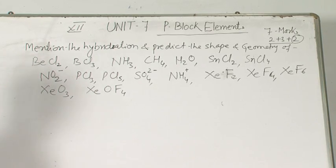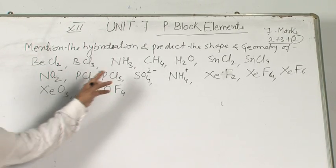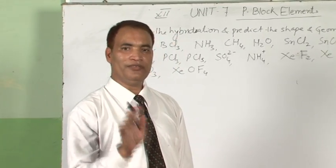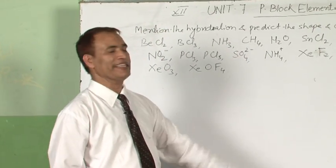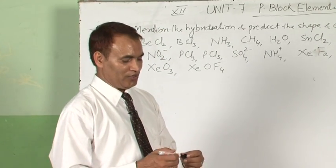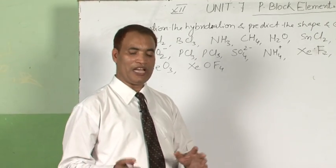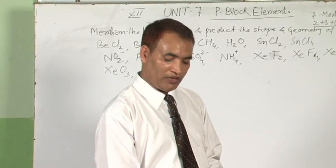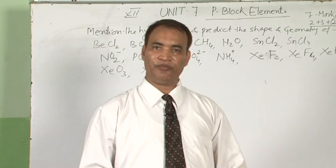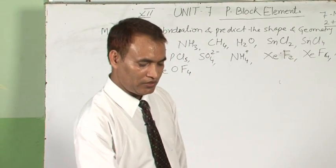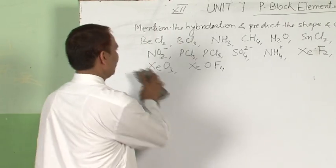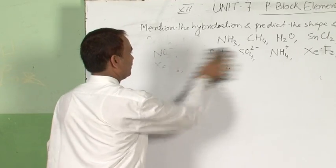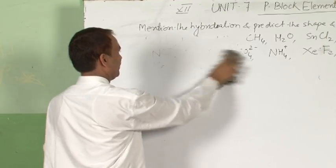It is very easy to predict the hybridization and structure of these molecules. I think after this class, you will be able to answer these questions within 10 seconds. To discuss these, first we need a little concept of the Valence Shell Electron Pair Repulsion theory — VSEPR theory — which we have already studied in Class 11. I just want to recall your memory regarding the VSEPR theory.